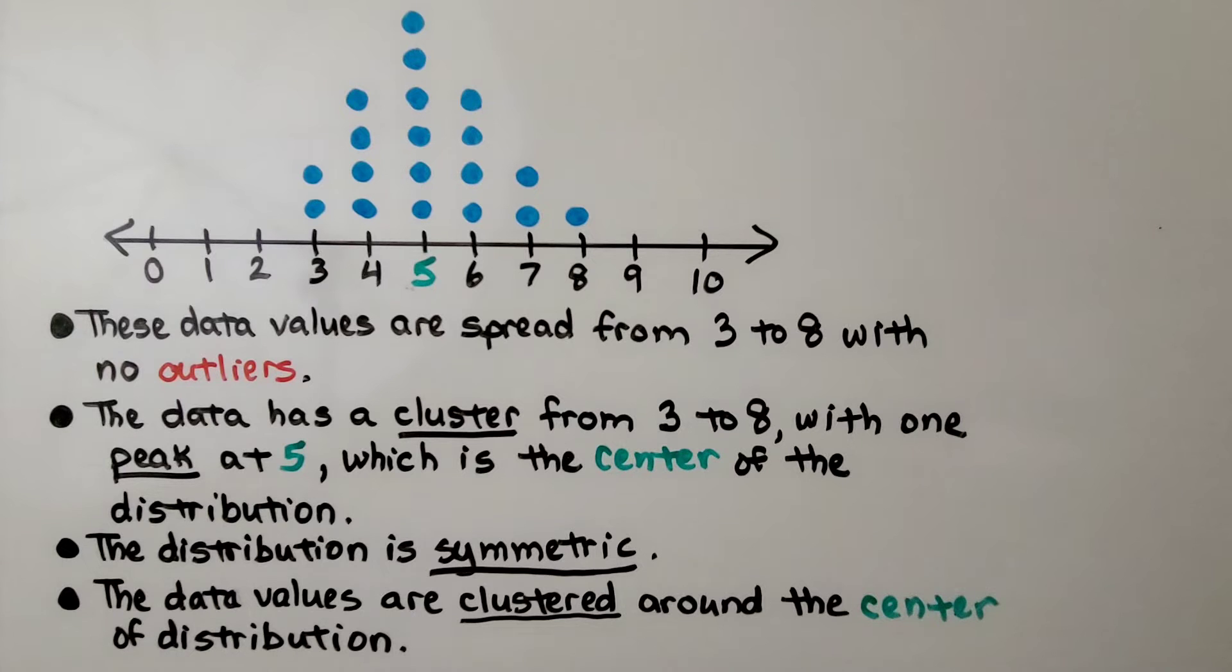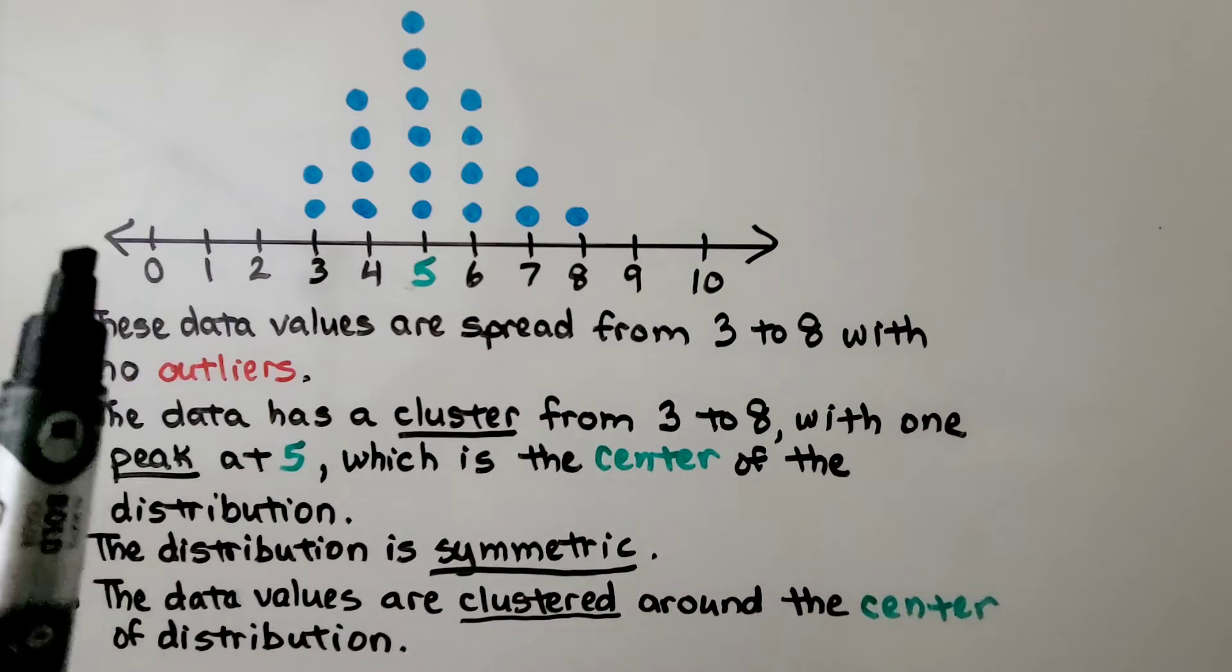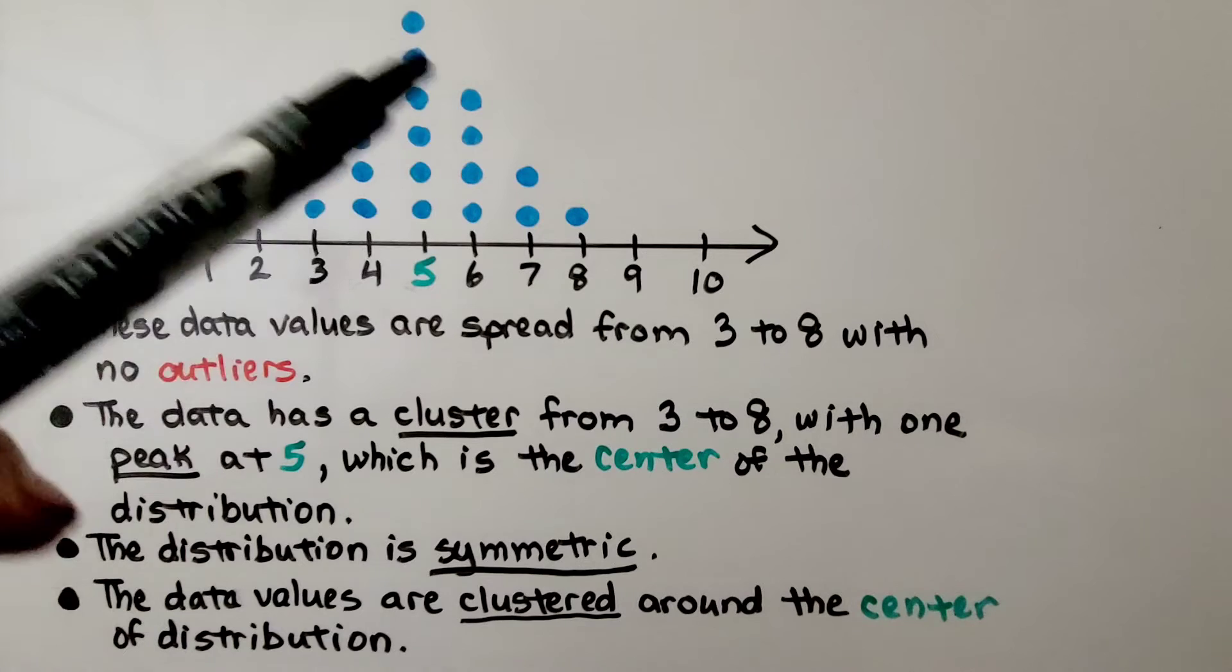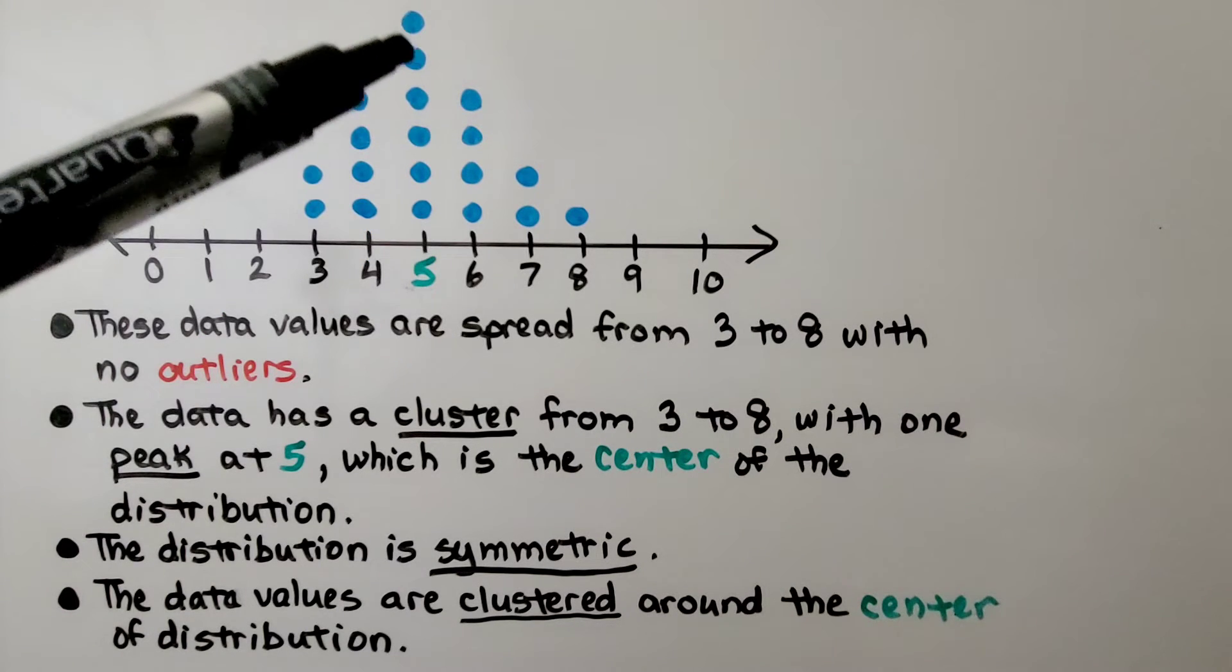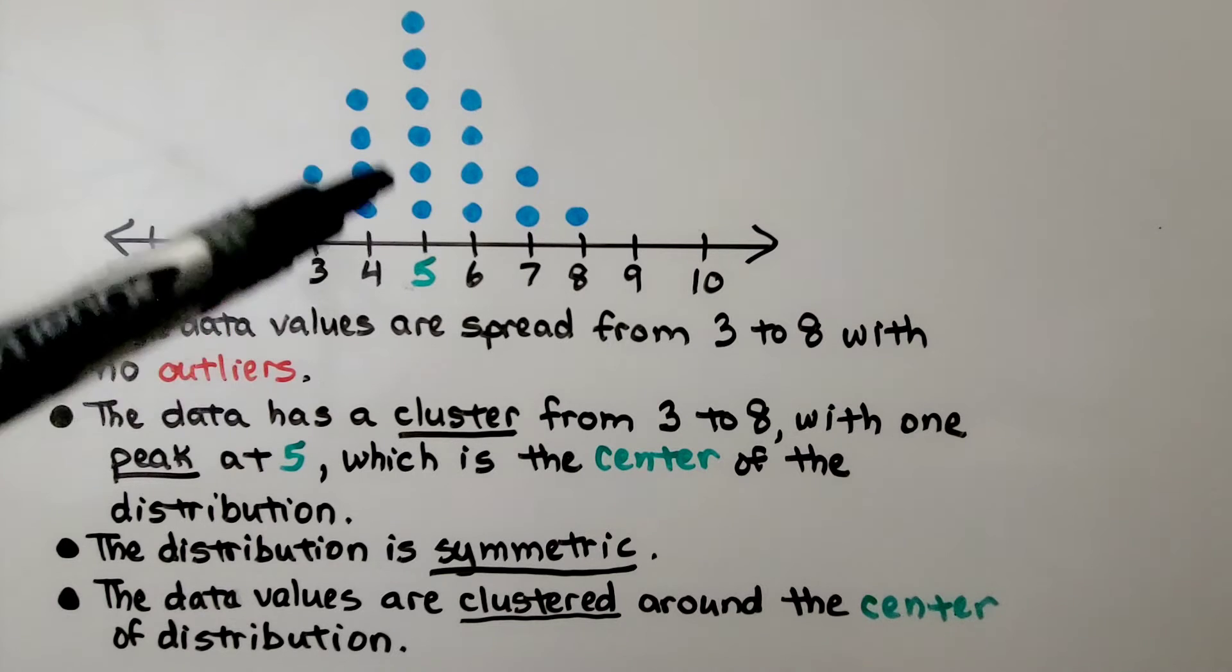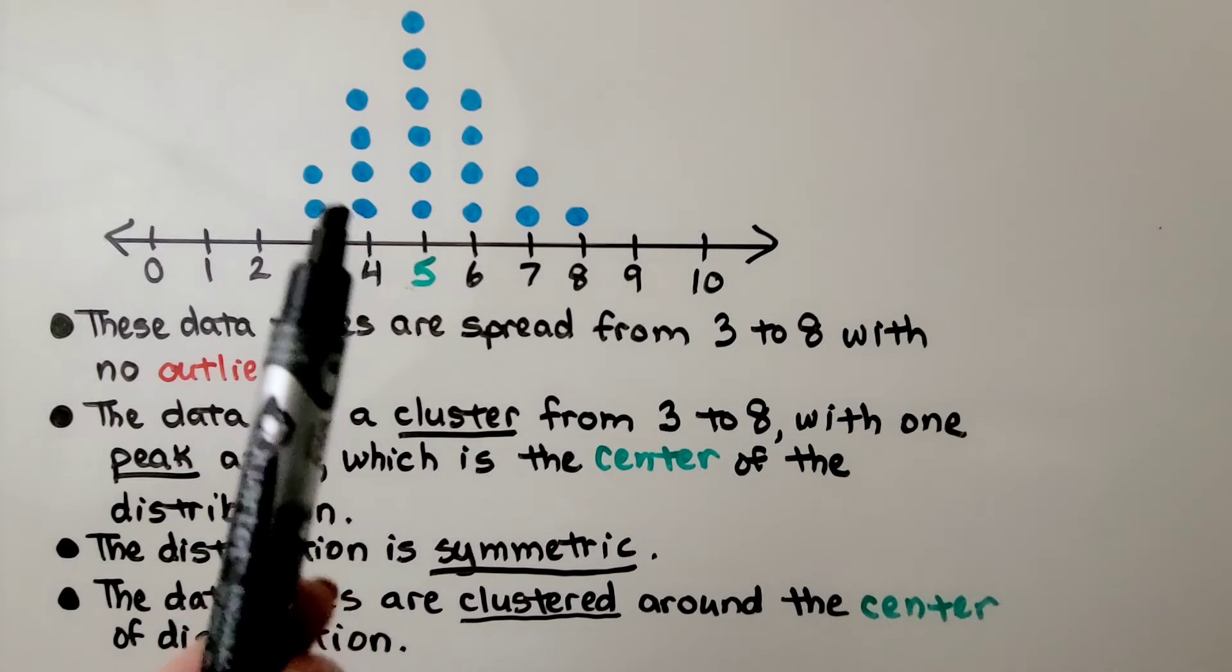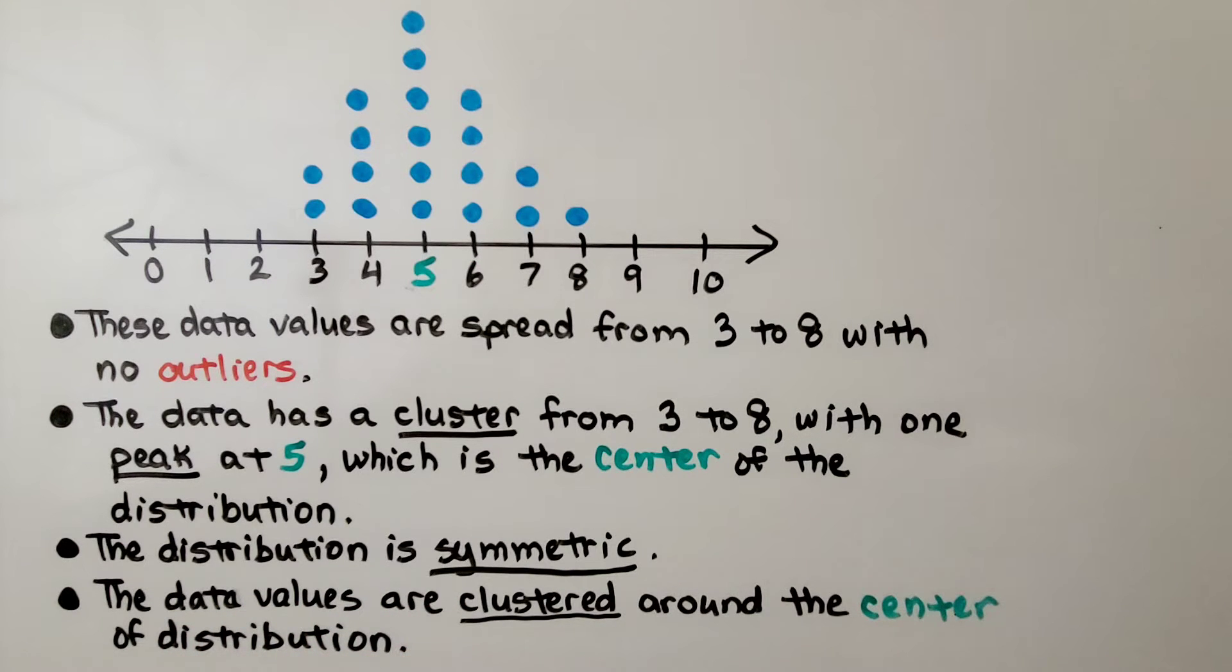Now take a look at this one. These data values are spread from 3 to 8 with no outliers. The data has a cluster from 3 to 8, and it has one peak at 5, which is the center of the distribution. And the distribution is symmetric. We've got about the same number on this side of 5 as we do on this side of 5, and the data values are clustered around the center of distribution.